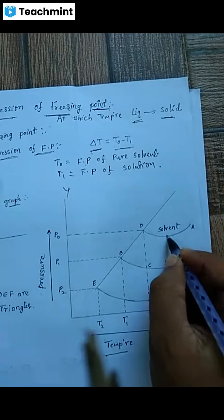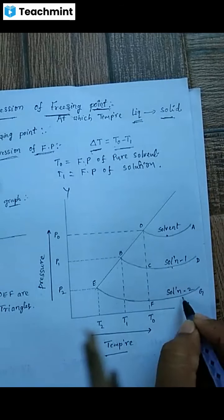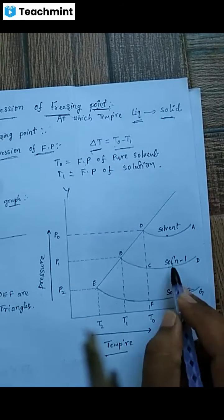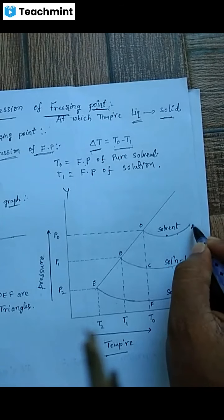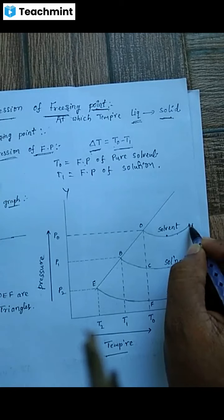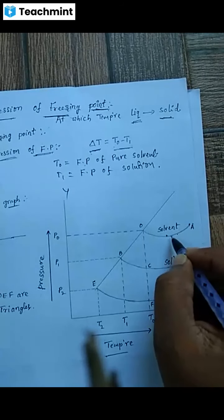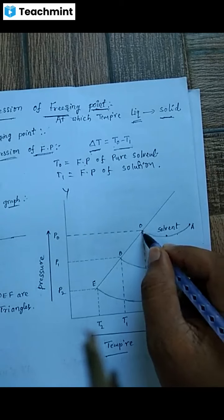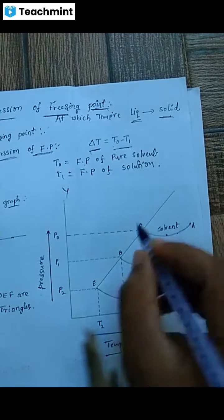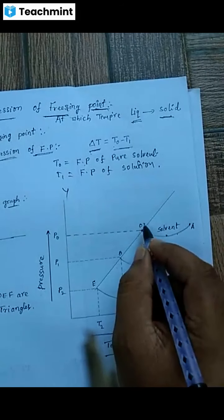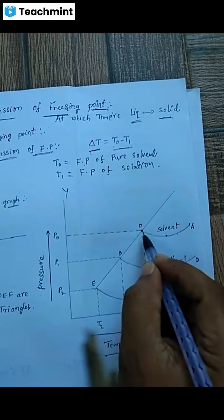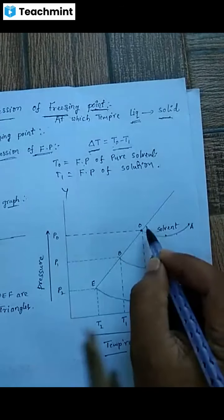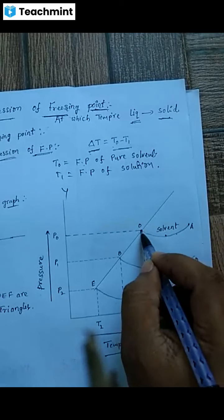Now the graphical representation: we have two solutions of different concentrations. For the pure solvent, the liquid state cools gradually, and at temperature T-naught it becomes a solid state. This is the freezing state. The temperature point is T-naught and the pressure point is P-naught, which is the freezing point of the solvent.